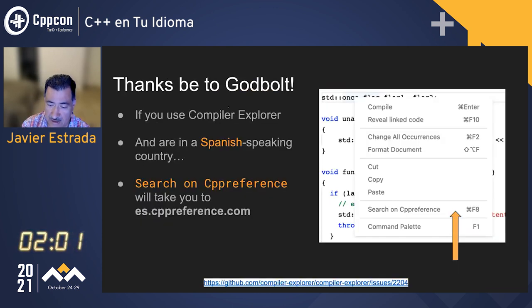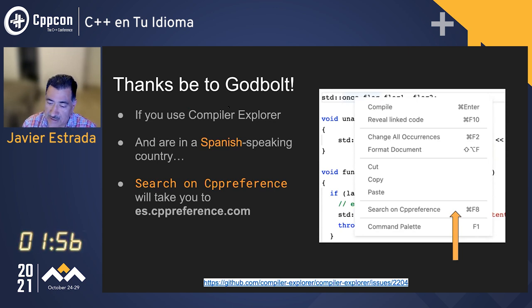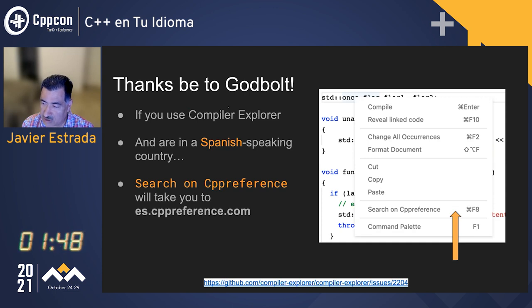Here's something new and bold: if you use Compiler Explorer, you can try this. Since August, you can click 'search on cppreference,' and if you are in a Spanish-speaking country, it will take you to the version in Spanish. So that's a good thing.